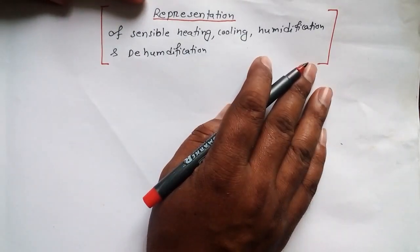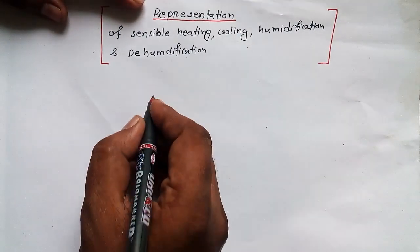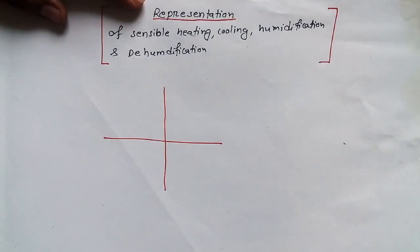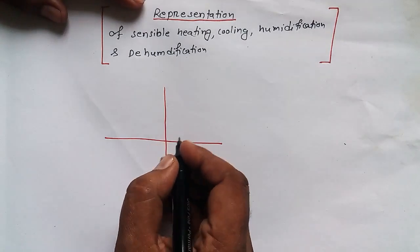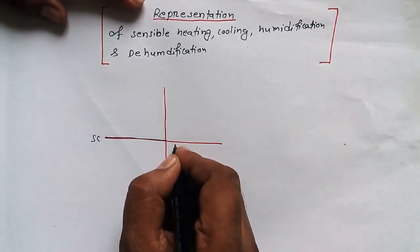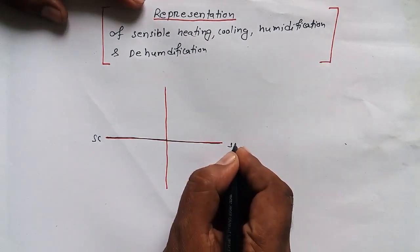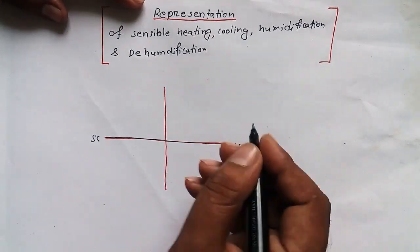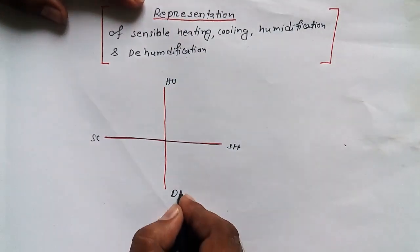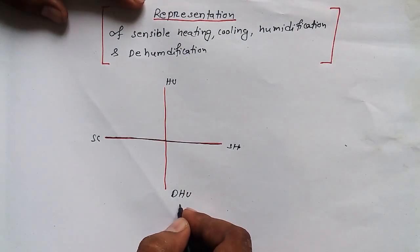So let me share with you how to do it. Basically what we have to do, we have to make an axis, X and Y. Now in case of sensible cooling, we are having this one. In case of sensible heating, we will have this one. In case of humidification, we will have this one. In case of dehumidification, we will have this one.